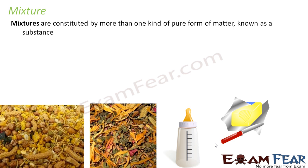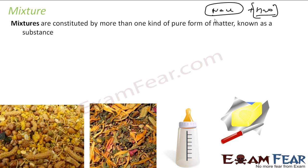Mixtures are constituted by more than one kind of pure substance. For example, NaCl alone is one pure component. But when you mix NaCl with water, the whole thing becomes a mixture. So a mixture is constituted by one or more forms of pure substance combined together.